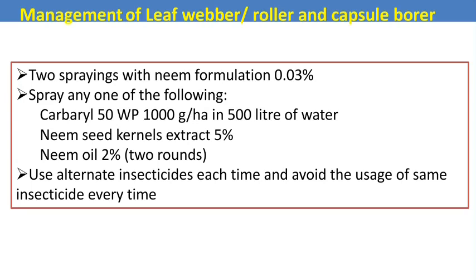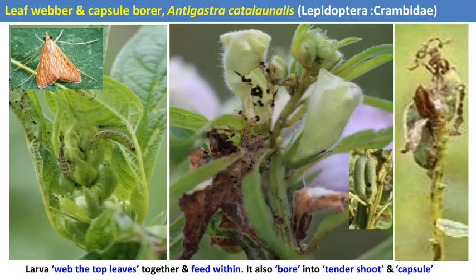For management of leaf roller or capsule borer in sesame, two sprays of neem-based products can be used. Chemical spraying with carbaryl is also effective. Alternate insecticides should be used each time to avoid using the same insecticide repeatedly.